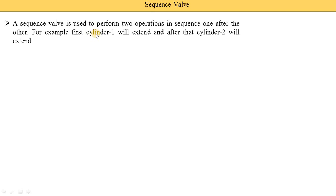The sequence valve is used in a system in which more than one actuator is used in a hydraulic or pneumatic system. For example, suppose two cylinders are used. The first cylinder will extend, and after that extension is completed in cylinder one, then cylinder two will extend. This is called a sequence — the cylinders extend or retract in a proper sequence. This is the function of the sequence valve: to operate a number of cylinders in a proper sequence.